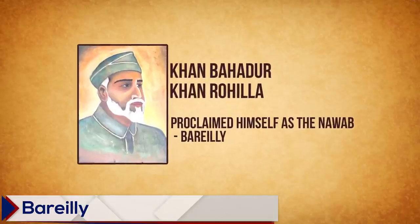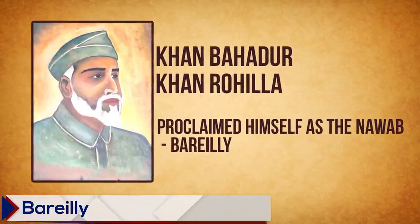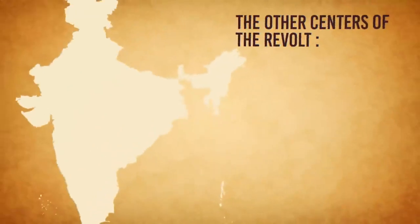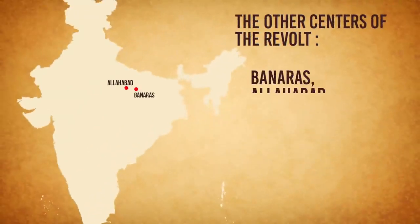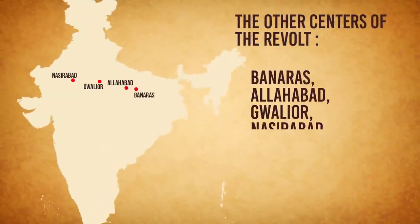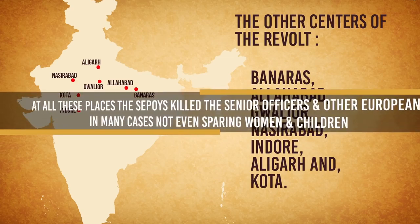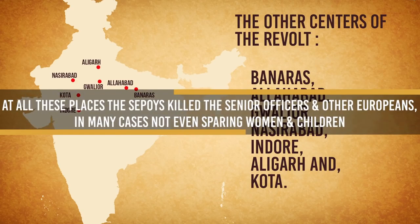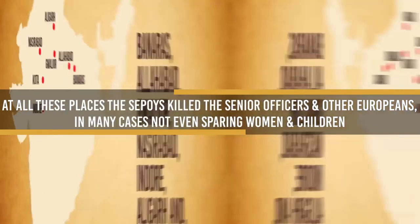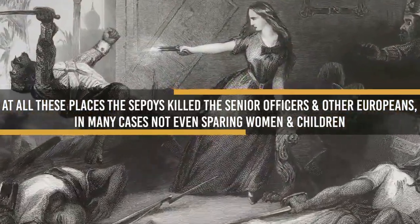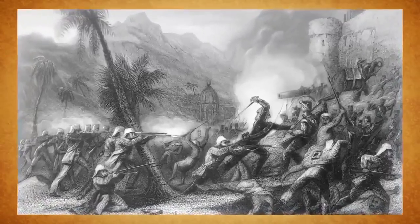Bareilly: Khan Bahadur Khan proclaimed himself as the Nawab and led the revolt there. The other centres of the revolt were Banaras, Allahabad, Gwalior, and Nasirabad in Rajputana, Indore, Aligarh, and Kota. At all these places, the Sepoys killed senior officers and other Europeans, in many cases not even sparing women and children. They also released prisoners from jail, plundered the treasury, and burnt land records at many places.